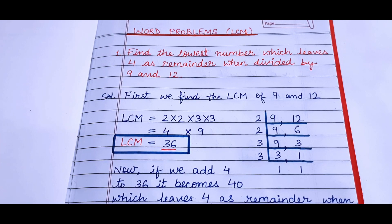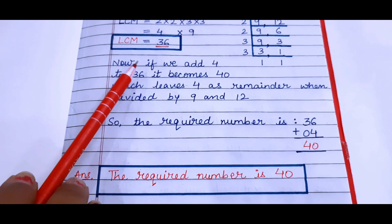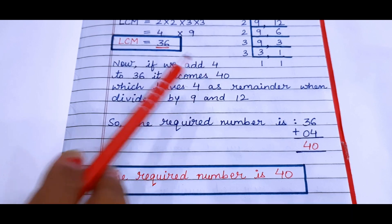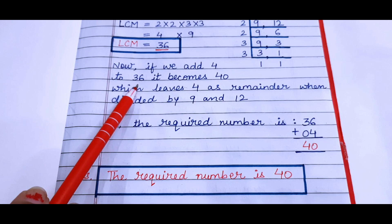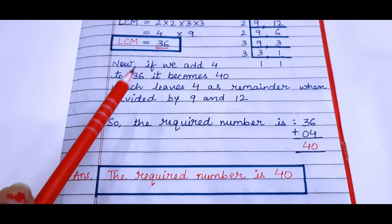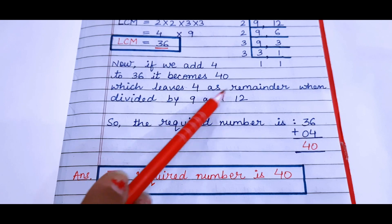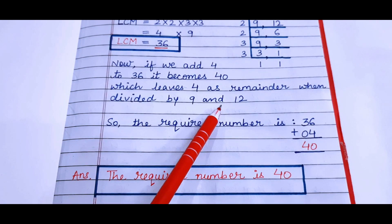Now what we do is see here. Now if we add 4 to 36, if we add 4 to this 36 it will become 40, which leaves 4 as remainder when divided by 9 and 12.